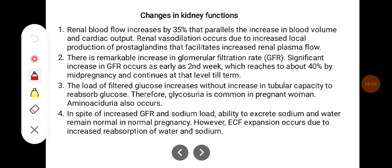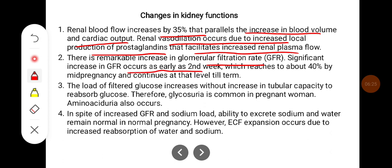Changes in kidney function: Renal blood flow increases by 35%, which parallels the increase in blood volume and cardiac output. Renal vasodilation occurs due to increased local production of prostaglandins that facilitates the increased renal plasma flow. There is a remarkable increase in the glomerular filtration rate. Significant increase in GFR occurs as early as the 2nd week, reaching about 40% by mid-pregnancy and continuing at that level till term. The load of filtered glucose increases without increase in tubular capacity to reabsorb glucose, so glycosuria is common in pregnant women.